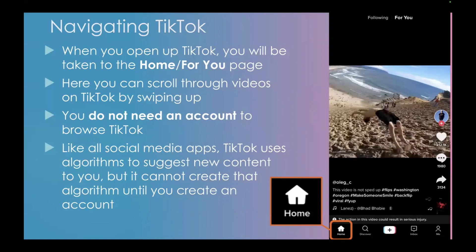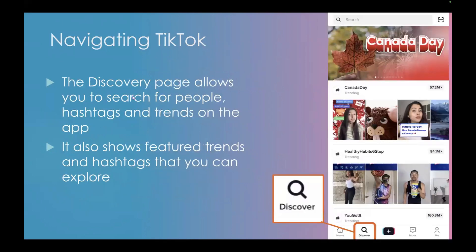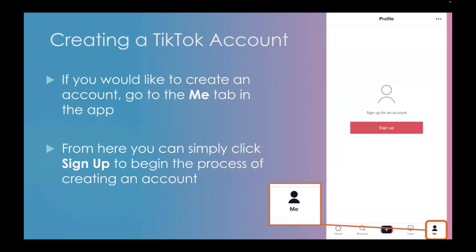Navigating TikTok is one of the easiest things — it's a very simplistic platform. When you open the app you're automatically on the home, which is your For You page where you can endlessly scroll through videos. You don't need an account to browse TikTok — it'll still tailor videos to you, just not as well since it can't track as much data. The algorithm fully personalizes things once you create an account, based on your location and what you interact with. The discovery page lets you search for people, hashtags, and trends, and shows featured trends you can explore — for example, searching 'knitting' would surface that community.